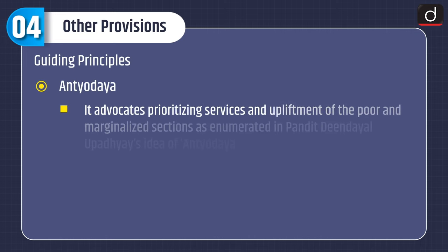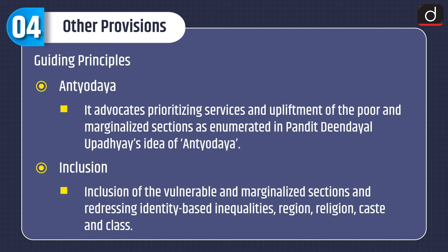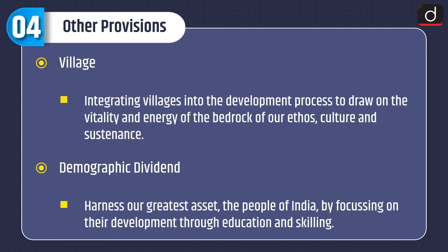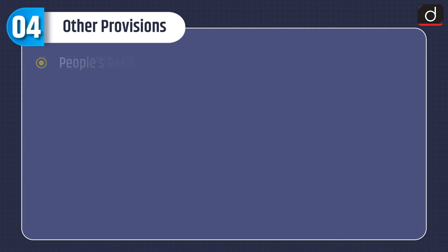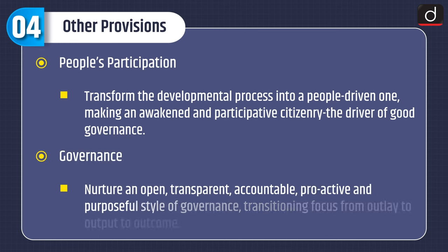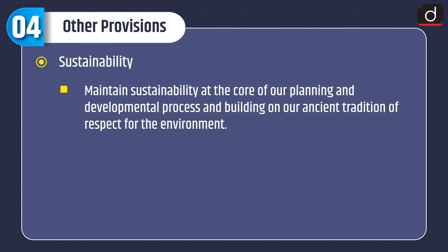Guiding Principles. Antyodaya: it advocates prioritizing services and upliftment of the poor and marginalized sections as enumerated in Pandit Deen Dayal Upadhyay's idea of Antyodaya. Inclusion: inclusion of the vulnerable and marginalized sections and redressing identity-based inequalities of region, religion, caste and class. Village: integrating villages into the development process to draw on the vitality and energy of the bedrock of our ethos, culture and sustenance. Demographic Dividend: harness our greatest asset — the people of India — by focusing on their development through education and skilling. People's Participation: transform the developmental process into a people-driven one, making an awakened and participative citizenry the driver of good governance. Governance: nurture an open, transparent, accountable, proactive and purposeful style of governance, transitioning focus from output to outcome. Sustainability: maintain sustainability at the core of our planning and developmental process, building on our ancient tradition of respect for the environment.